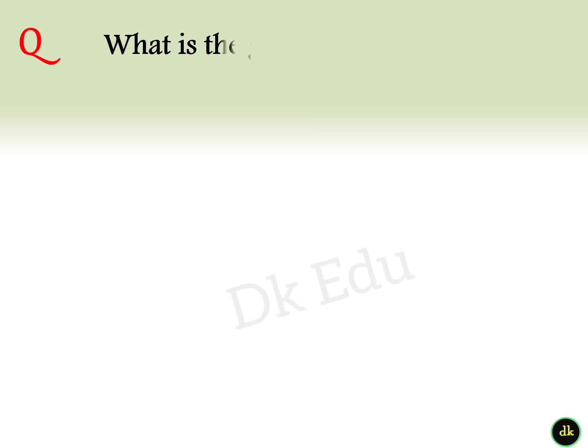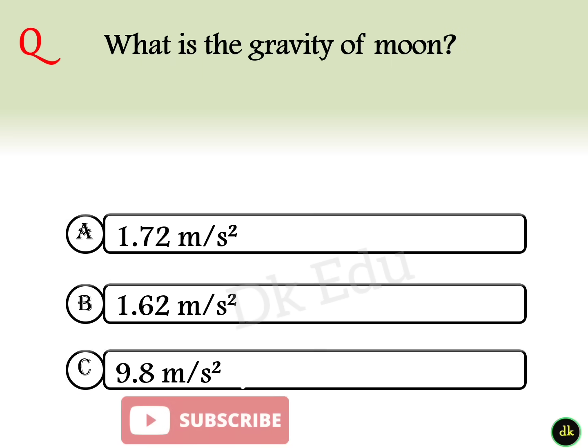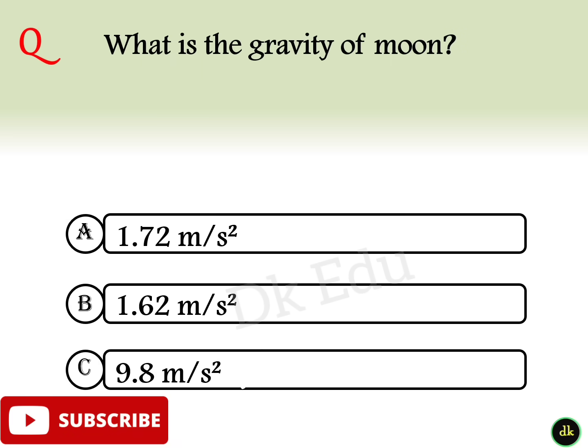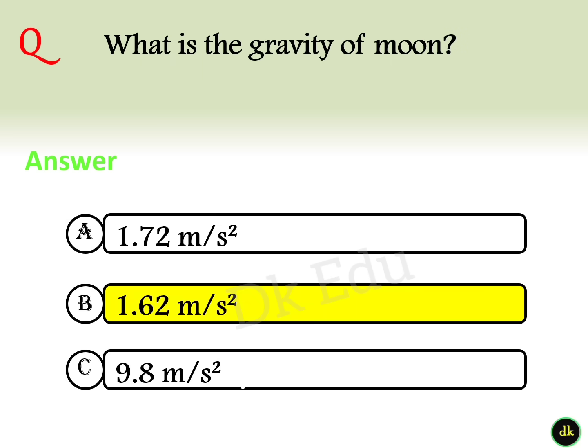5th question: What is the gravity of the moon? Answer option B: 1.62 meters per second squared.